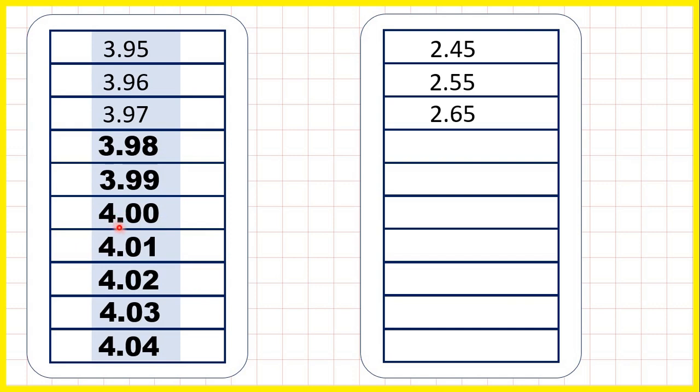But again, 4.00 would usually just be written as 4, because we don't need 0.00 on the end of a number, we have a whole number.